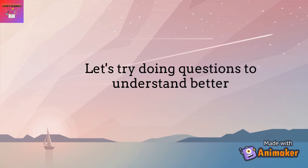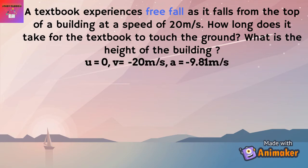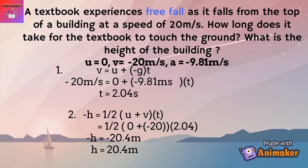A textbook falls at 20 m/s. How long does it take to touch the ground and what is the height of the building? Gather the information from the question. To find time, use v equals u plus at, where a equals negative g. Solving gives a time of 2.04 seconds. To find the height, use h equals one-half times (u plus v) times t. The height is negative because it's falling down, giving a building height of 20.4 metres.